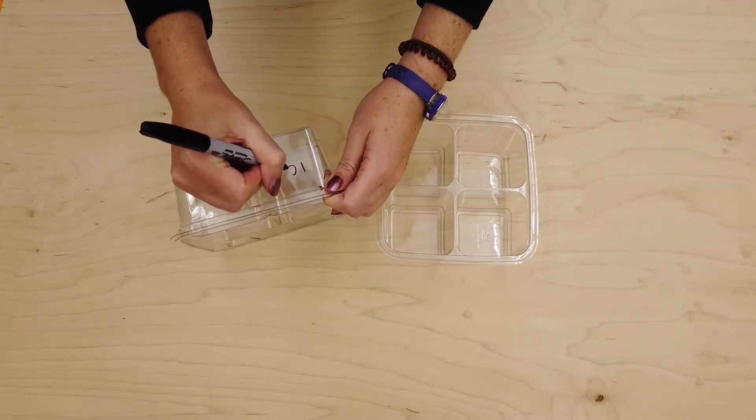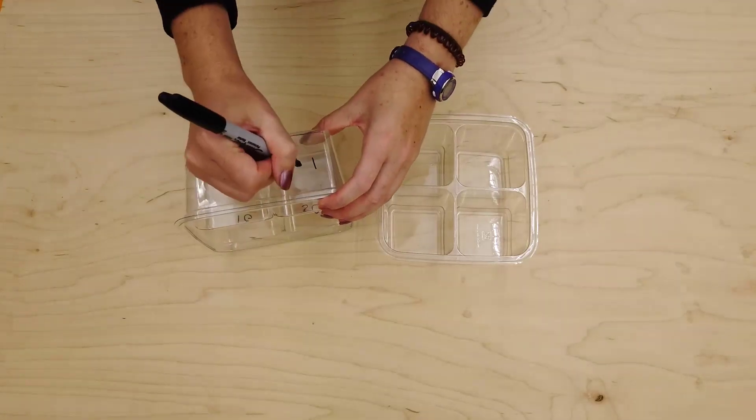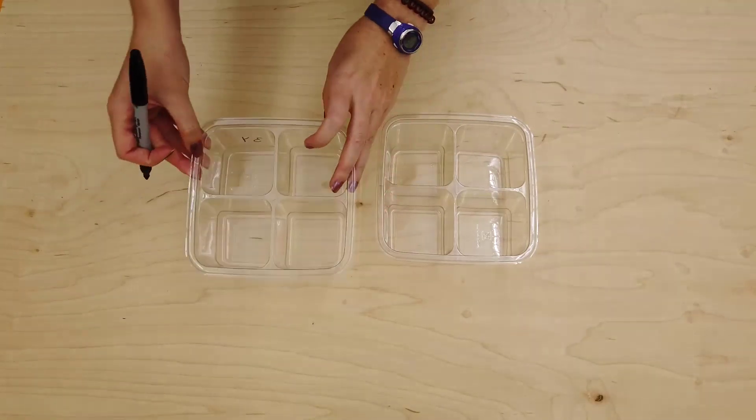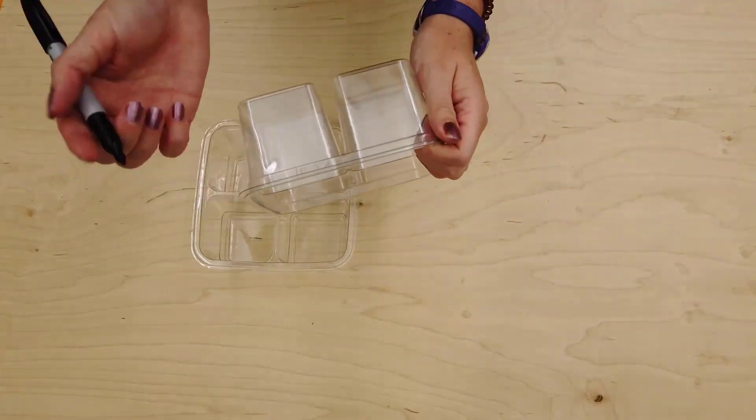There are 6 treatments. Each peat pellet gets a different treatment. Using a Sharpie, label each deli tray compartment with a treatment. You can use initials to indicate color, for example, P for purple and W for white.